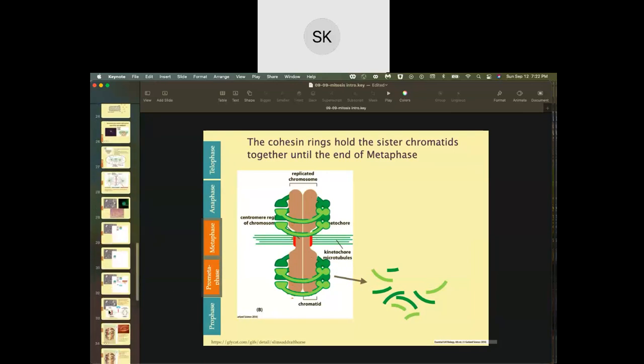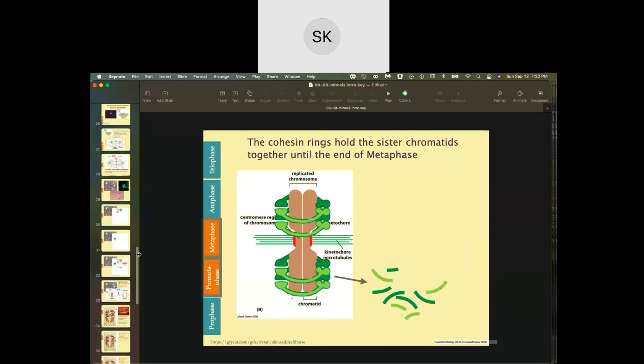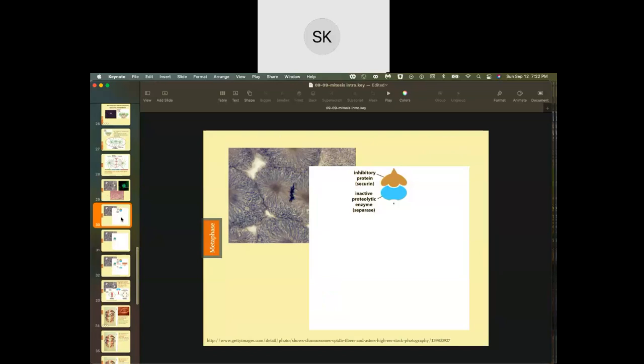So separase is going to break down these cohesin rings. They're going to be torn apart essentially, and then you're going to be able to separate the sister chromatids. How do we go from having separase being inhibited by securin to it acting on the cohesin rings? Well, that's due to the action of this protein called APC, and this stands for anaphase promoting complex.